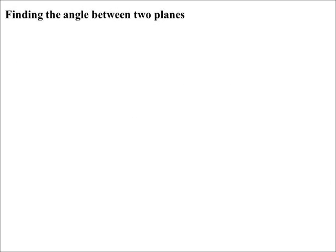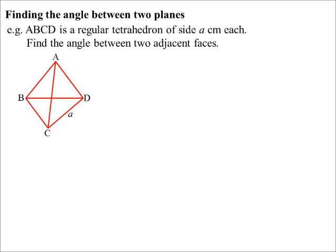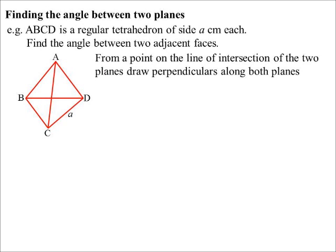What happens if you've got two planes? So let's draw up a diagram. I've drawn a tetrahedron there. For the example we're going to use, we're going to find the angle between two adjacent faces. So two adjacent faces would basically be two planes joining each other. From the point of intersection of the two planes, I've got so many planes there, I could pick any two I like, but I'll draw perpendiculars along both of them.